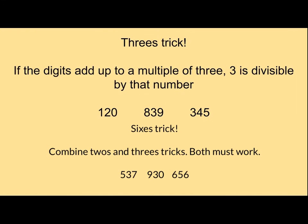And then the threes trick, these two are a little bit more complex, but you get the hang of it. So if the digits add up to a multiple of three, 3 is divisible by that number. So if I do 1 plus 2 plus 0, it's going to give me 3. So this will be divisible by 3.